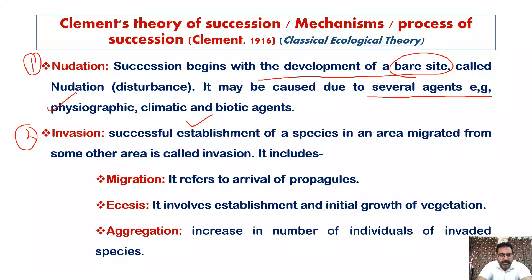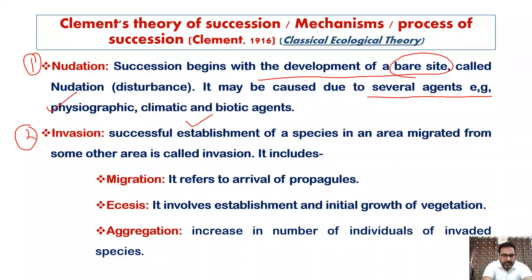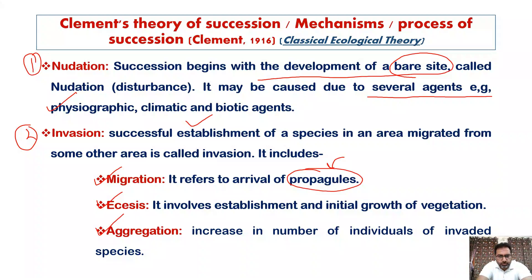When some species migrate from other areas and reach a place which is nude, which is not having any kind of vegetation, we call such a process invasion. Invasion is completed in three steps: the first is migration, the second is ecesis, and the third is aggregation. Migration refers to the arrival of propagules of certain species which arrive at the nude place.